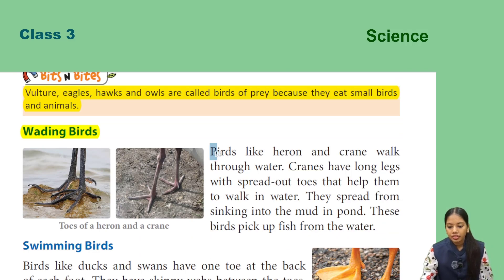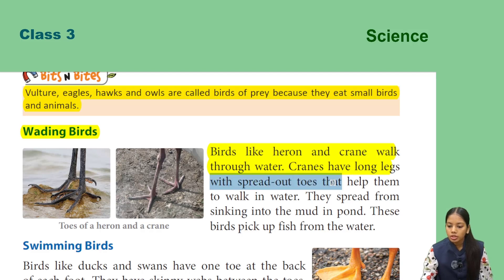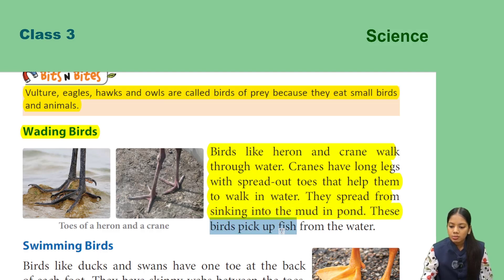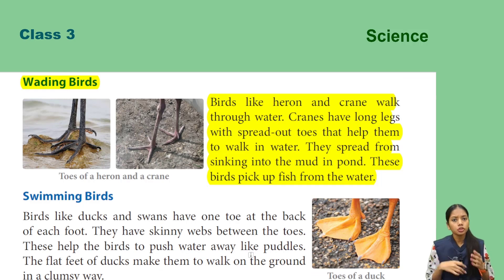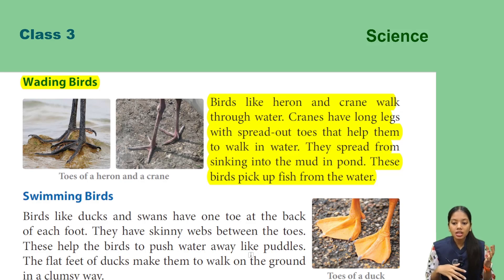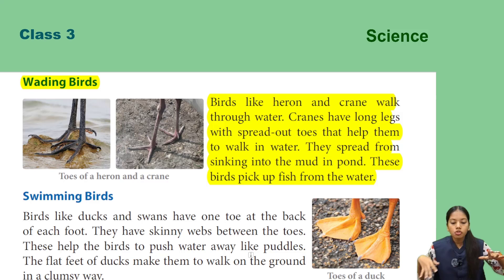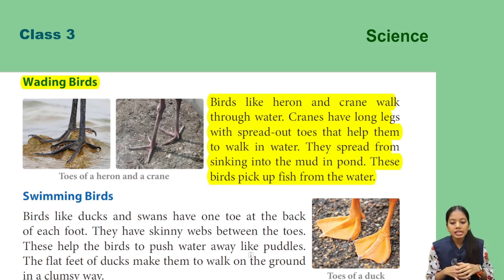Wading birds: birds like heron and crane walk through water. Cranes have long legs with spread-out toes that help them walk in water and prevent them from sinking into mud in ponds. These birds also pick up fish from the water.